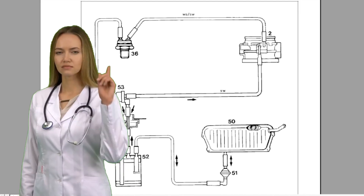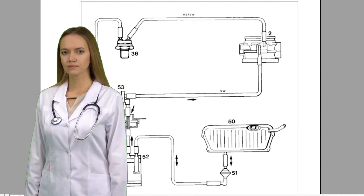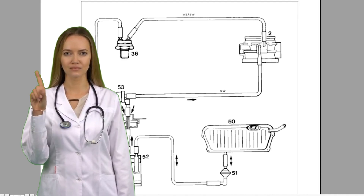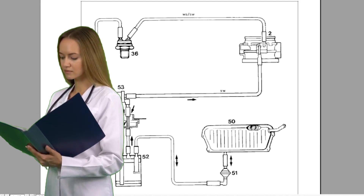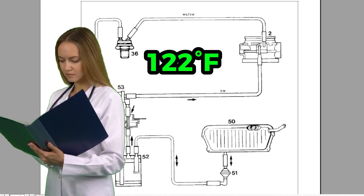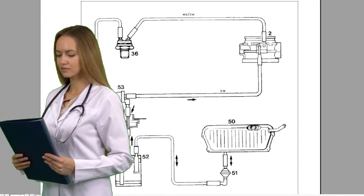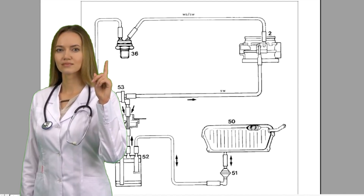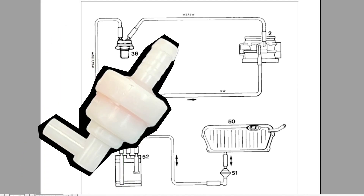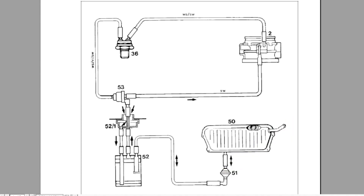The vapors are combusted in the engine, but not always — it depends on engine load. If the coolant temperature is under 70 degrees C, there will be no suction because the purge valve is closed. If the throttle body is fully closed, as soon as pressure between 30 and 50 millibar is created in the fuel tank, the breather valve opens and fuel vapors flow to the charcoal canister.